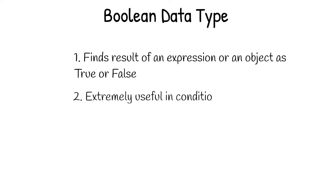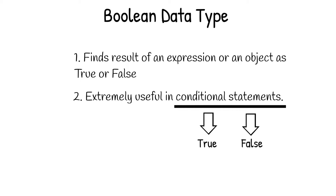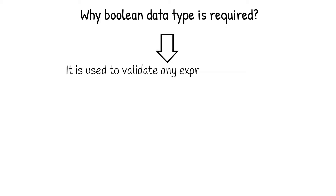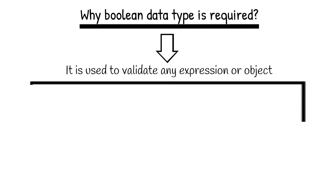Booleans are extensively useful with conditional statements, as the result of any conditional statement is represented by a boolean value. We will learn about conditional statements in detail in a future video. For now let us focus on the boolean data type and see how it functions. Boolean data type becomes extremely important to validate any expression or object. We need to first understand why this data type is so important.